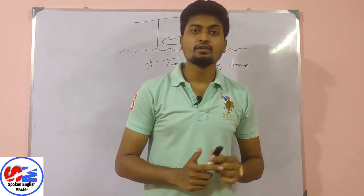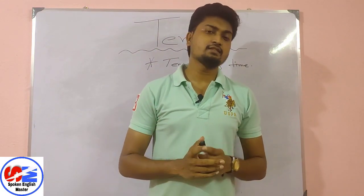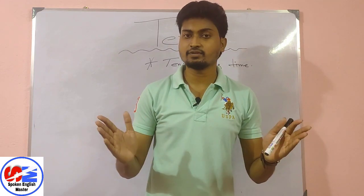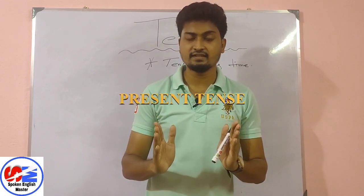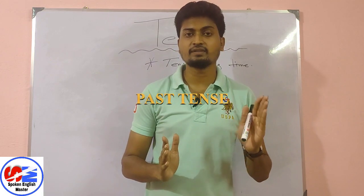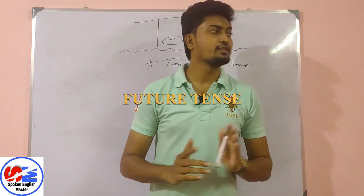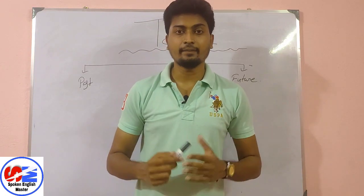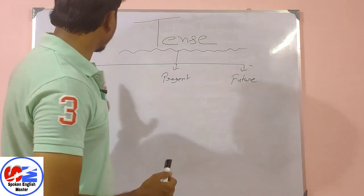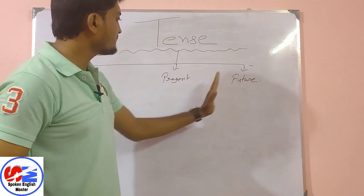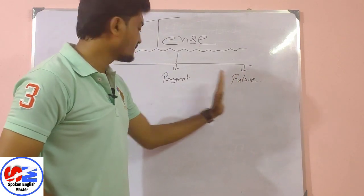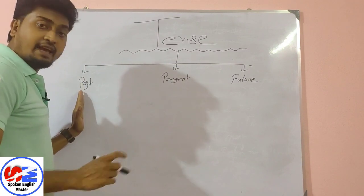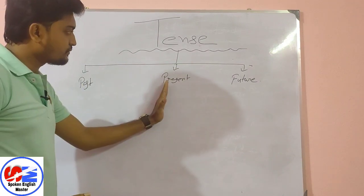We have to understand how many types of tenses there are. Basically there are three types: number one is present tense, number two is past tense, and number three is future tense. I have written all three types on the board. Now, past tense has four parts, present tense has four parts, and future tense also has four parts.